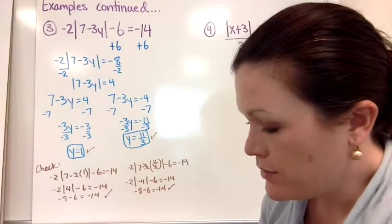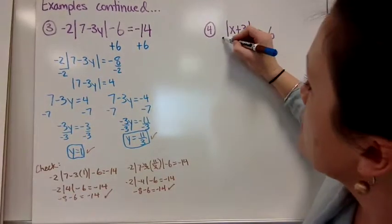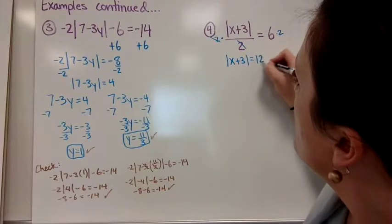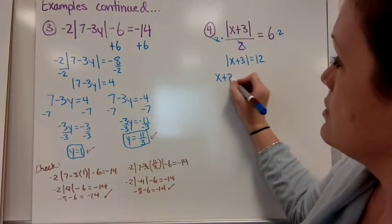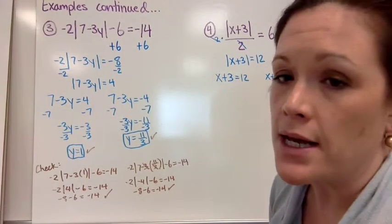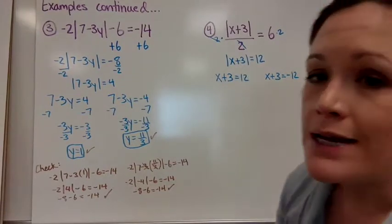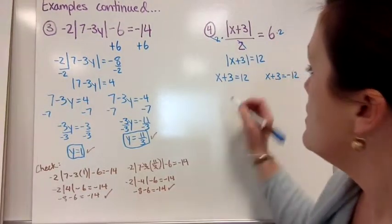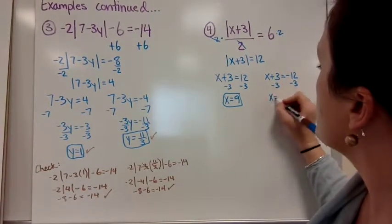For the last example, we have the absolute value of x plus three divided by two equals six. Multiply both sides by two so the twos cancel: the absolute value of x plus three equals 12. That's a positive number, so we continue. Set up two equations: x plus three equals 12 and x plus three equals negative 12. Subtract three from each: x equals nine, and x equals negative 15.